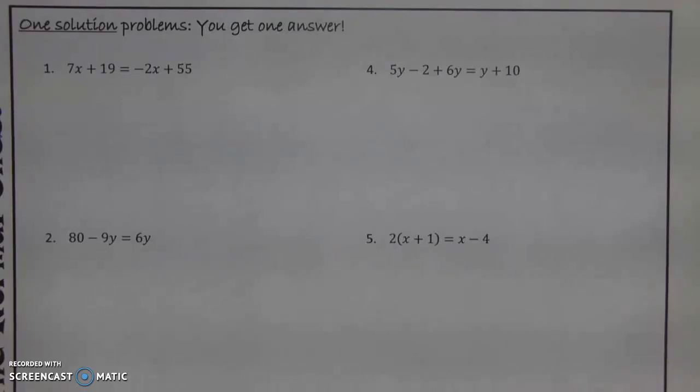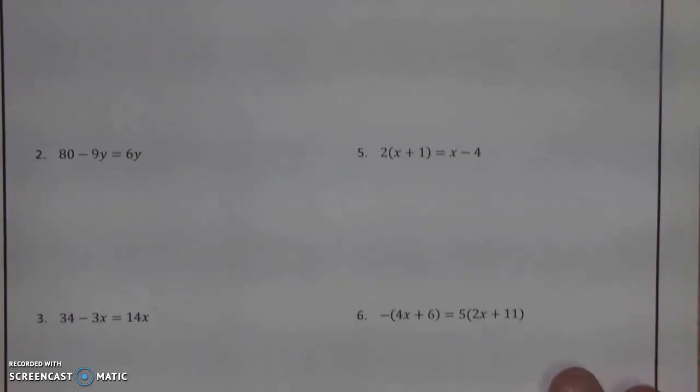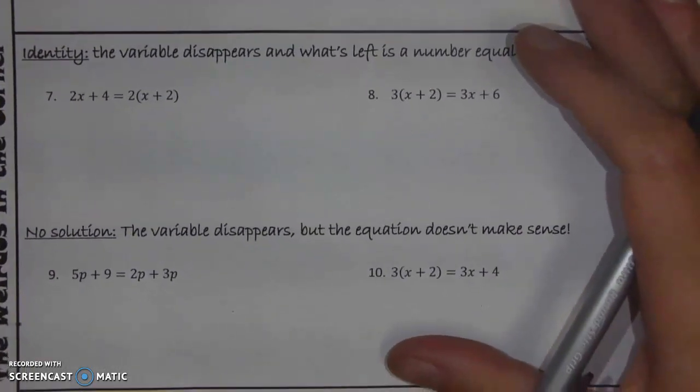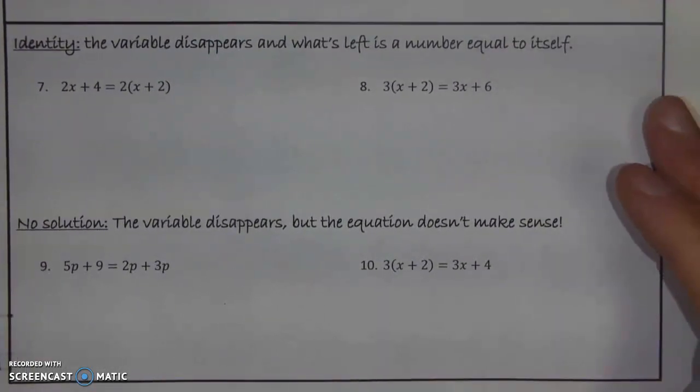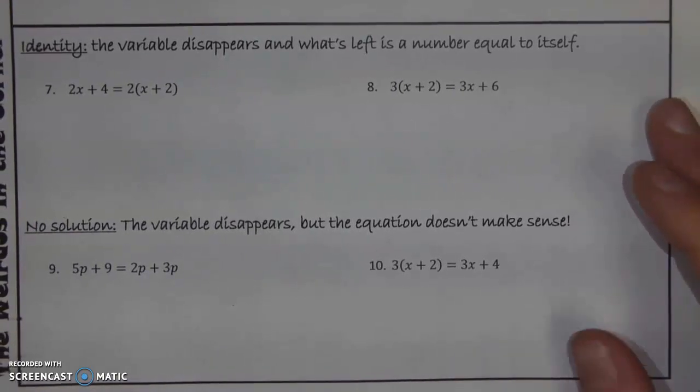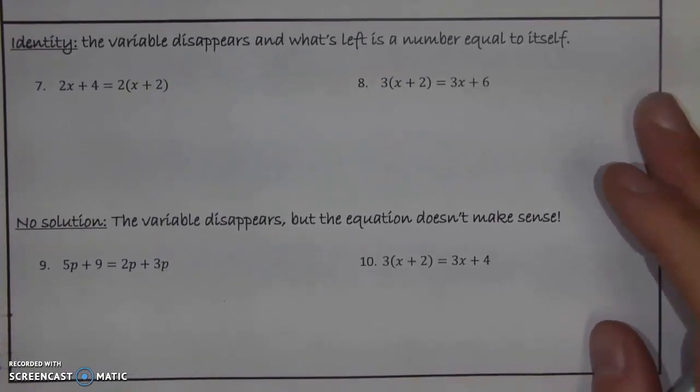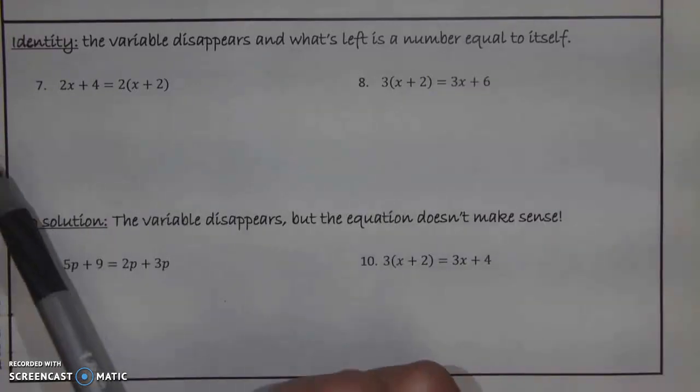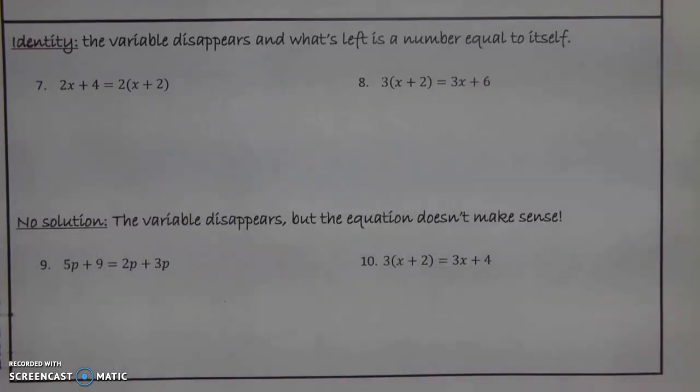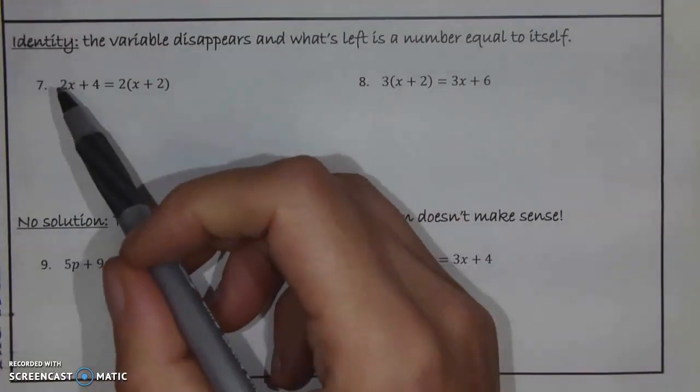So we're going to take a look at when that happens, and let's do that using the bottom of that worksheet that you have from last time. Now when we're looking at these ones, we're going to have two general situations. They won't look much different initially than the problems that we had above, but a couple odd things are going to happen. So let's start with number seven.